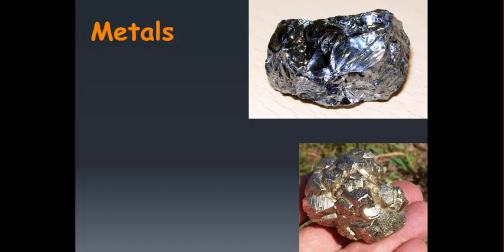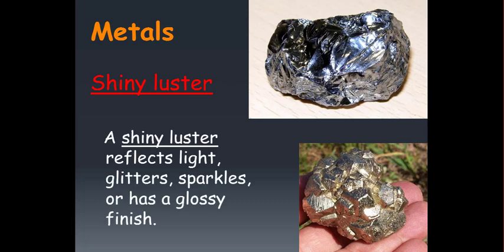The first property we're going to look at that metals have is this shiny luster. A shiny luster means that it reflects light, it will glitter, it might sparkle, or it's got a glossy finish. Shiny luster is what we think of when we think of metals. Metals are always reflective of light, they shine, and so this is one of the first things we think of as a characteristic of a metal.